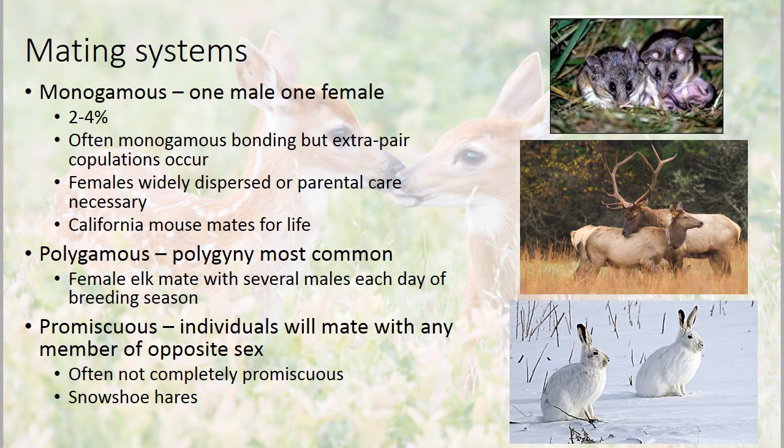The different mating systems are similar to the ones we've talked about for birds. Some mammals are monogamous, where one male and one female pair bond, but that's a really small percentage — 2-4% — and that number might be a little inflated. Research is finding that there's a lot of extra pair copulations that occur even in those situations.